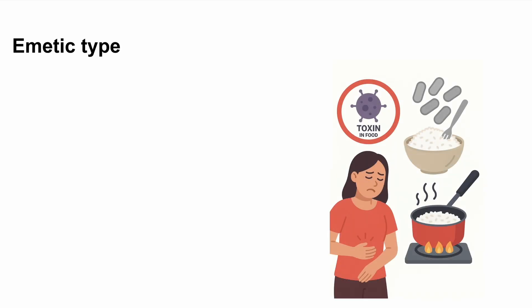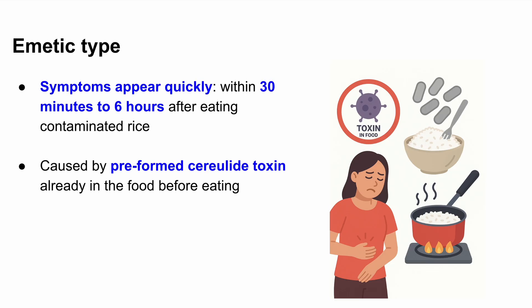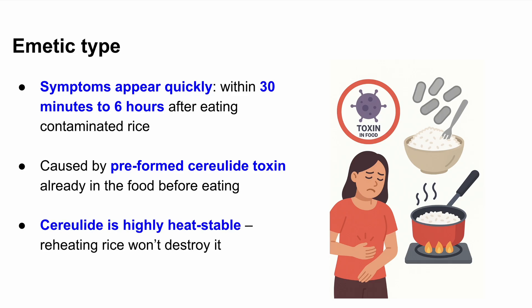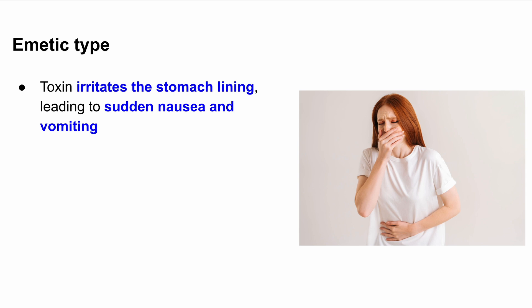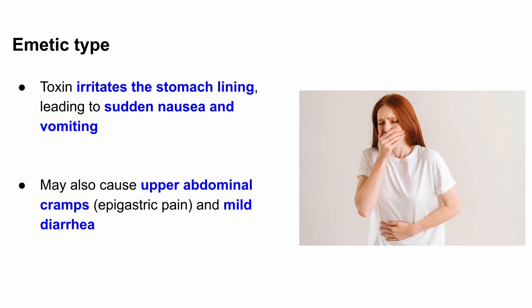Let's start with the emetic type. Emetic means vomiting. This form of the illness affects the upper gastrointestinal tract, mainly the stomach. The symptoms show up very quickly — within 30 minutes to 6 hours of eating the contaminated rice. Why so fast? Because the toxin responsible is already preformed in the food before you eat it. This toxin is called cerelide. Cerelide is extremely stable, which means even reheating the rice won't destroy it. Once you eat the rice, the toxin irritates the lining of your stomach, leading to sudden nausea and vomiting — the hallmark symptoms of this emetic type. There may also be some crampy abdominal pain centered in the upper belly, or epigastric region. Diarrhea can happen too, but it's usually mild and not the main feature in the emetic type.